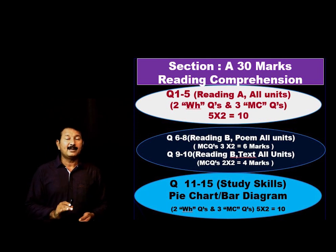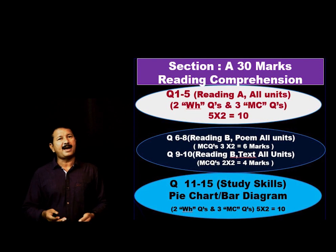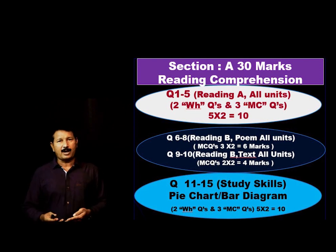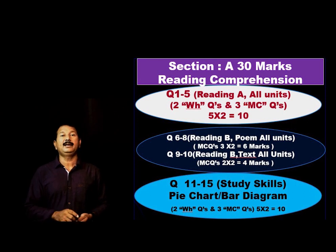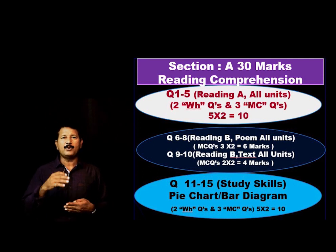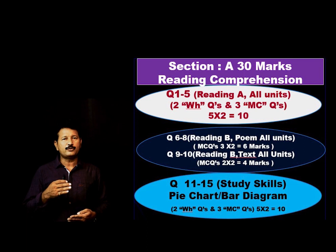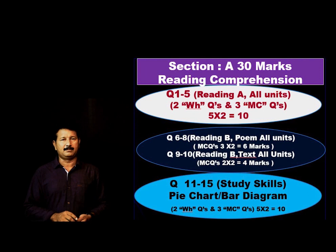Question number 11 to 15: questions 11 and 12 are WH questions, and 13, 14, 15 follow. This is all about reading comprehension — 20 marks from textual, 10 marks for study skills questions. That is all about 30 marks for Section A.